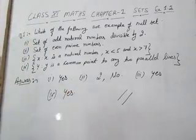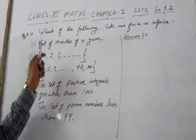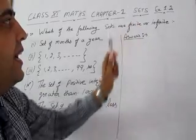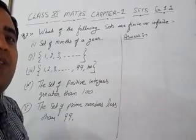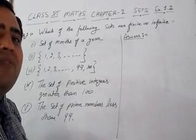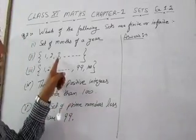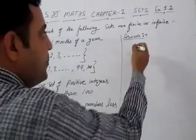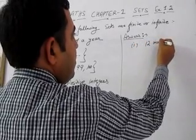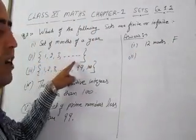Question number 2: which of the following sets are finite or infinite? As we know from the definition, finite sets are those sets which have a finite number of elements. The first part is the set of months of a year — we know there are 12 months in a year, so it is a finite set. The second part is {1, 2, 3, ...} — there are infinite elements, therefore this is an infinite set.